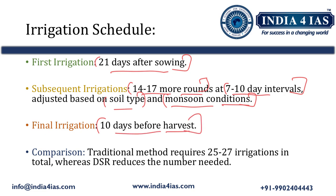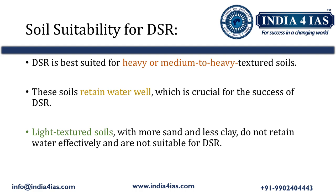Comparing the traditional method and direct seeding of rice, the irrigation requirement in the traditional method is 25 to 27 irrigations in total, whereas in DSR it is 14 to 17. DSR thus reduces the amount of water required for paddy crop growth. DSR is suitable for heavy or medium to heavy textured soils, and not suitable for light textured soils because they do not retain water effectively, increasing water requirement.